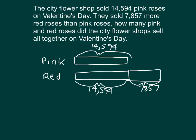Now, that's not the question being asked. It says how many pink and red roses did the city flower shop sell altogether? So what we're really solving for is this variable R — all of the roses that are being sold. The bottom bar represents the number of red roses sold, and the top bar represents the number of pink roses sold. So to solve for R, we'll add the totals for both bars together.